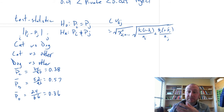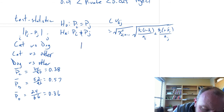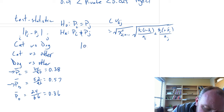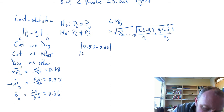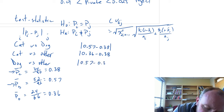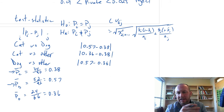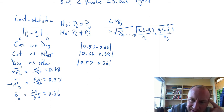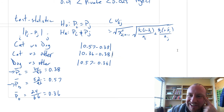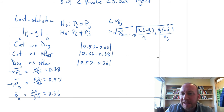Now we calculate the point estimates for each pair. For cat versus dog, that's 0.57 minus 0.38. For cat versus other, it's 0.36 minus 0.38. And for dog versus other, it's 0.57 minus 0.36. The order doesn't really matter because we're taking the absolute value — all we need is the magnitude of the difference. Then we compare each against the critical value, which is an involved calculation.